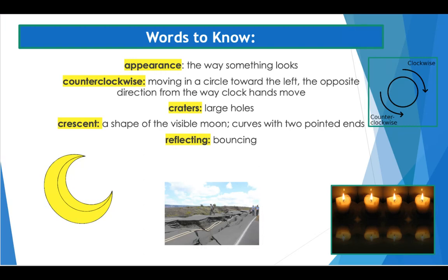Let's begin with that first word we're going to hear in our story today: the word 'appearance.' Appearance means the way something looks. An example of this is: a tree's appearance changes as the seasons change and its leaves turn brown and fall off. The word: appearance.